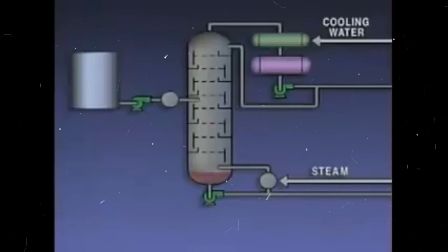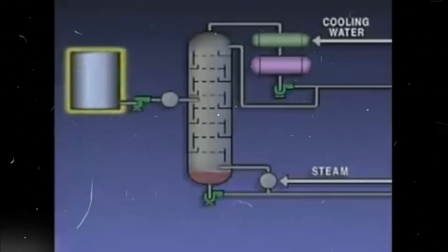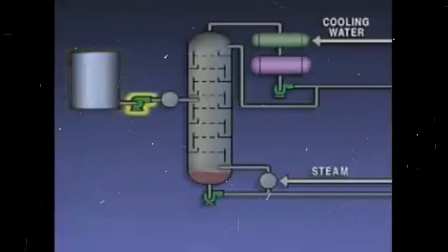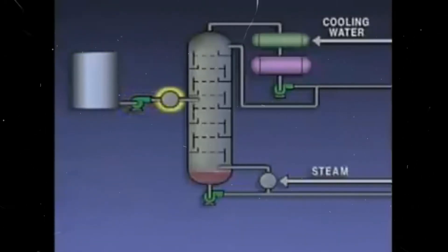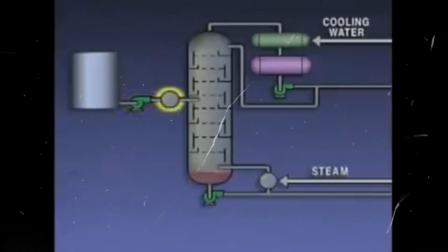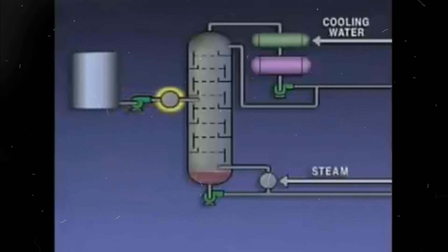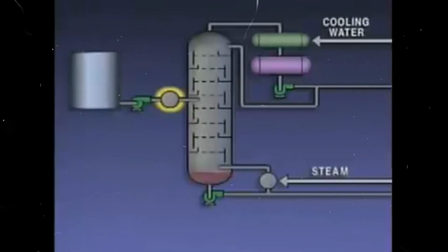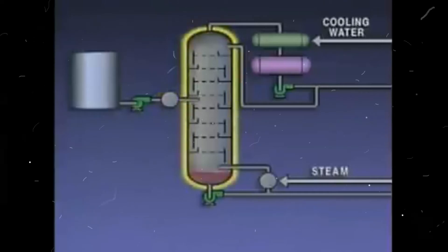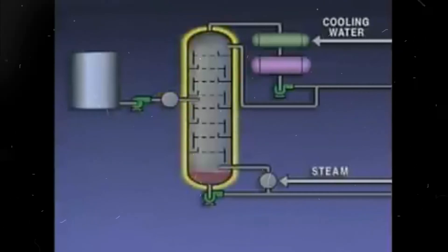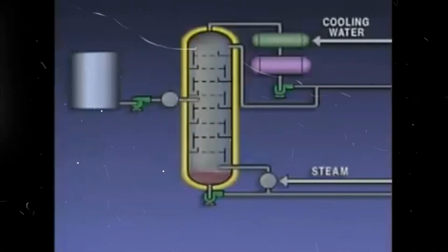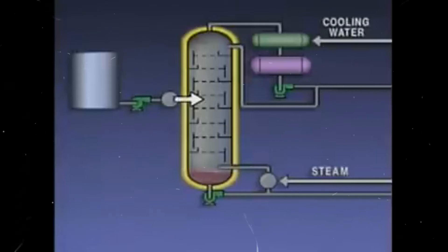Let's take a look at a simplified representation of a distillation system. In this example, the feed is stored in a tank. During operation, a pump is used to move the feed from the tank to a preheater. In the preheater, the mixture is heated under pressure to just below its boiling point. The pressure in the tower is lower than the pressure in the preheater, so when the feed enters the tower, it starts to boil.